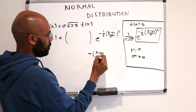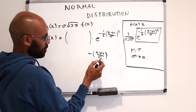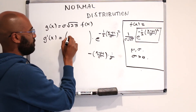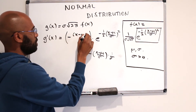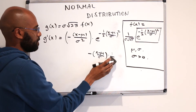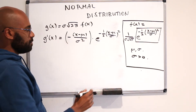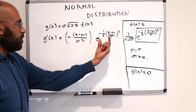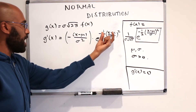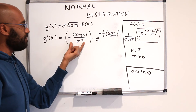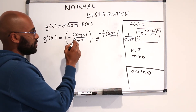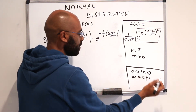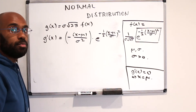Taking the derivative of g using the chain rule: g prime of x equals e to the negative one-half x minus mu over sigma squared, times the derivative of the exponent, which is negative x minus mu over sigma squared. Setting g prime of x equal to zero: the exponential is never zero, so we need the factor negative x minus mu over sigma squared to be zero. That happens when the numerator is zero, i.e., when x equals mu. So we have a critical point at mu.